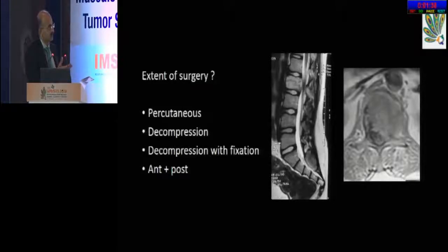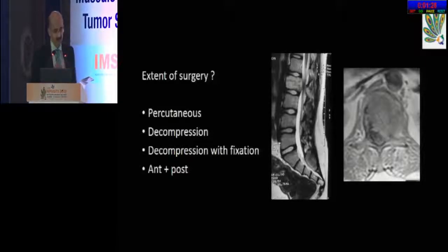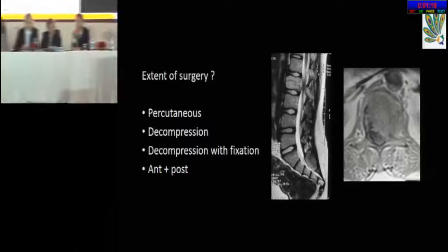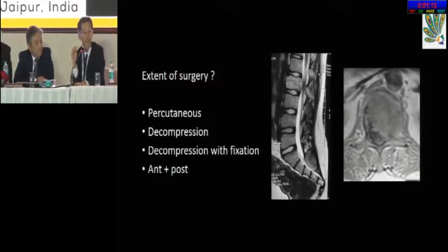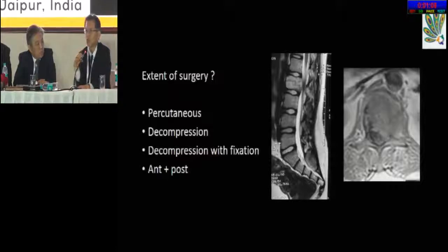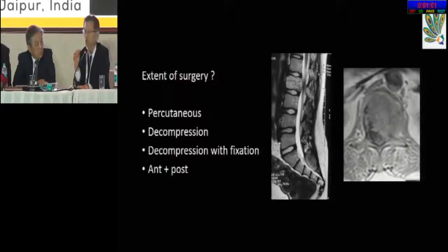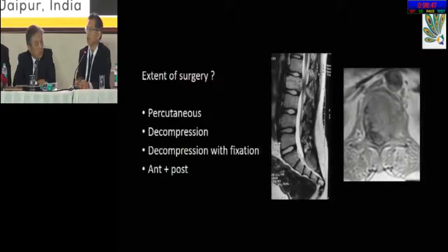Coming to the end of the session — if surgery is needed for this patient because she has not responded to radiation and neurodeficit has progressed, what sort of surgery would be preferred? Decompression alone is not a good surgery — that is clear from the evidence. The preferred approach is posterior decompression with posterior fixation, which is the gold standard for metastatic spinal tumor. Total en bloc spondylectomy is sometimes needed but is very, very rare.